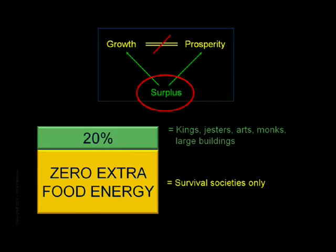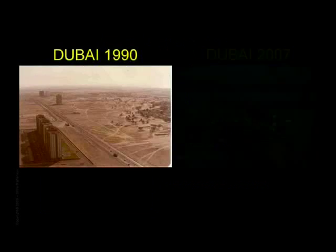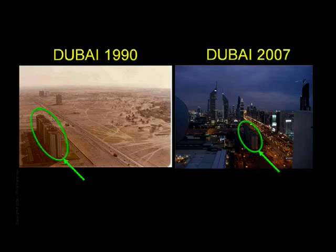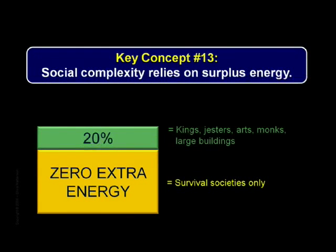With sufficient surplus energy, humans can construct remarkably complex creations in short order, as these pictures of oil-rich Dubai taken only 17 years apart attest. Now we can state the 13th key concept of Crash Course: social complexity relies on surplus energy.